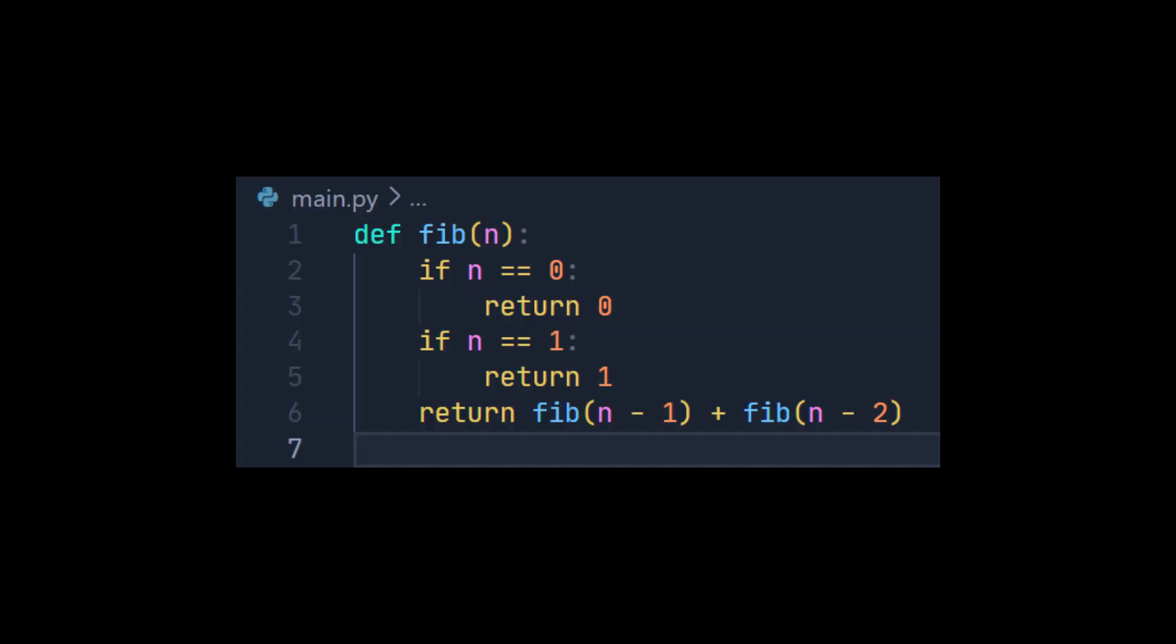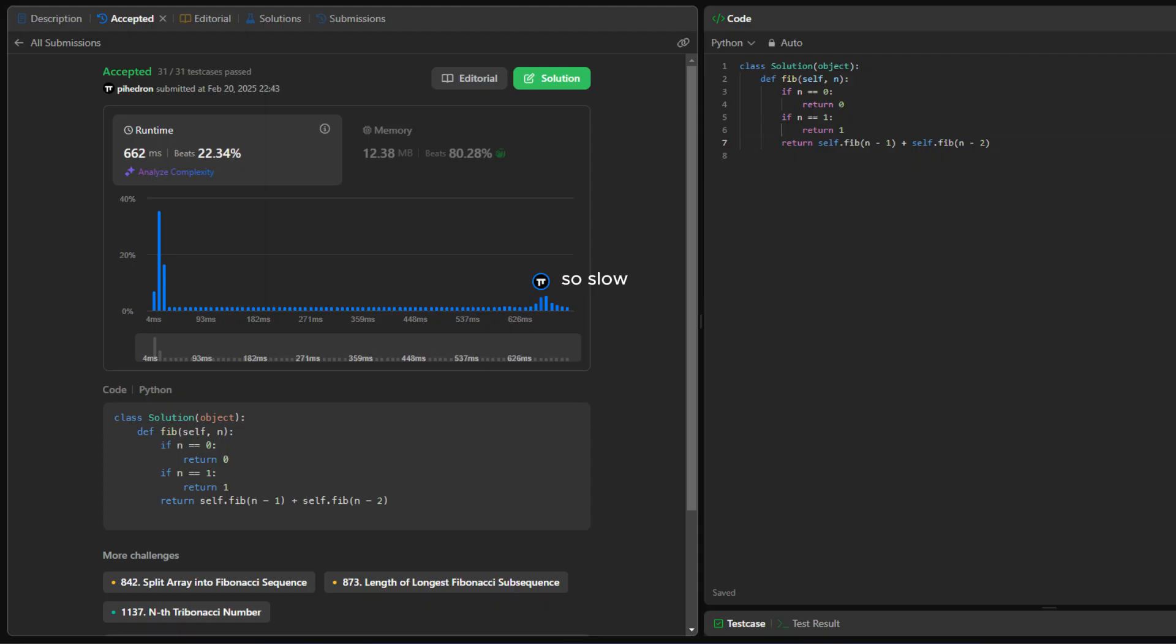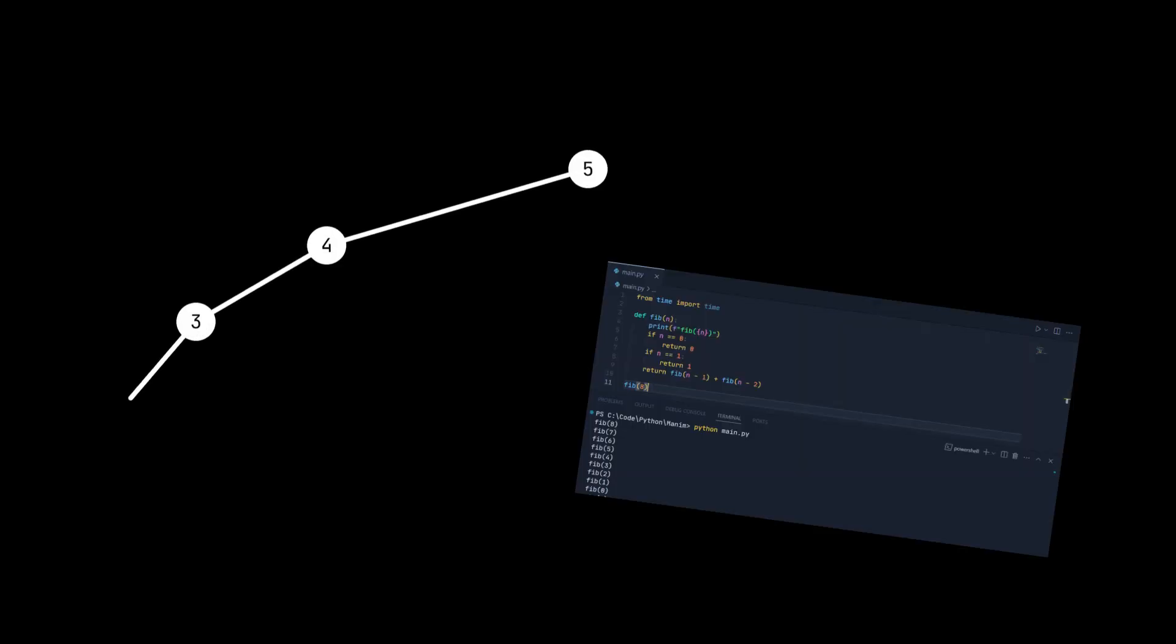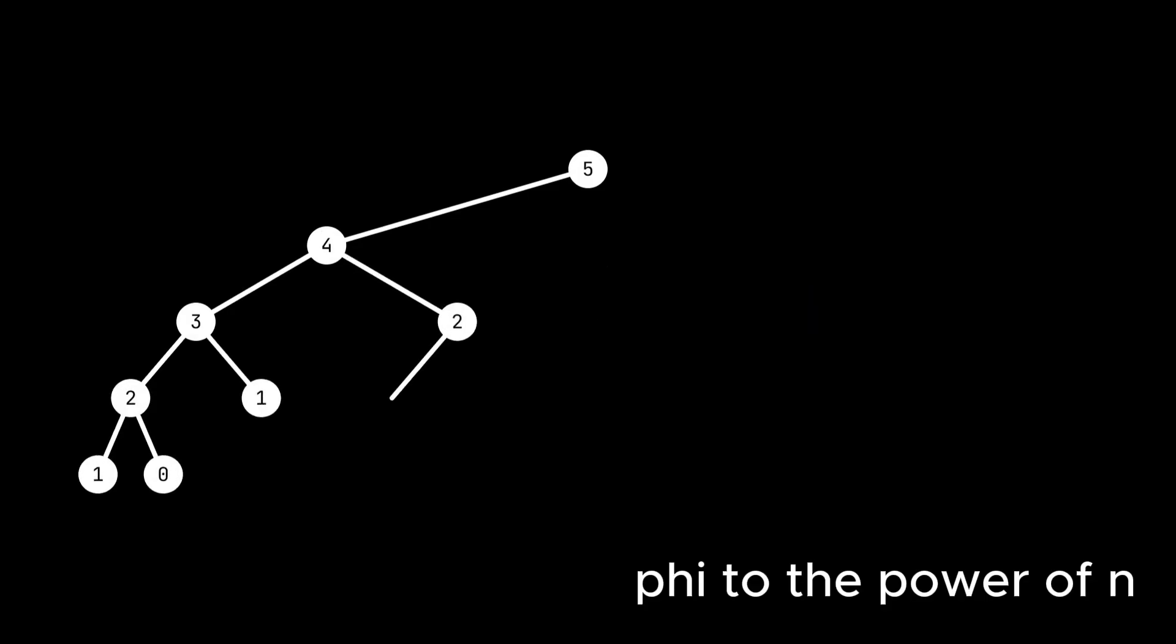In fact, we can take this definition literally, plugging in the base cases into our function to pass a LeetCode challenge. However, our tiny function takes an eternity to compute the 42nd Fibonacci number because the number of times we call the function grows exponentially at the rate of phi to the power of n.